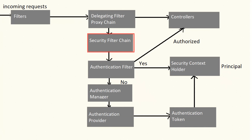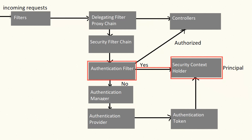As we have included security, our request will pass through the security filter chain too. This security filter chain delegates the authentication work to the authentication filter. This filter is responsible for checking whether the incoming request is from an authenticated user, by checking the security context holder, which holds the information about the user who is currently logged in — called the principal.